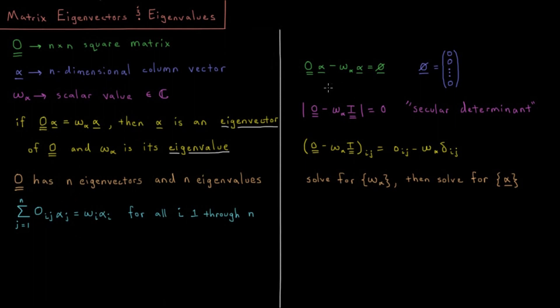If we do the following type of manipulation: we take matrix O times vector alpha and subtract from both sides omega_alpha times alpha. Both results are vectors, so we can do vector subtraction on both sides, and the result of this is going to be a zero vector.